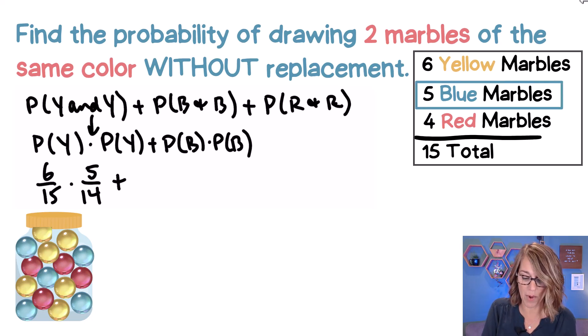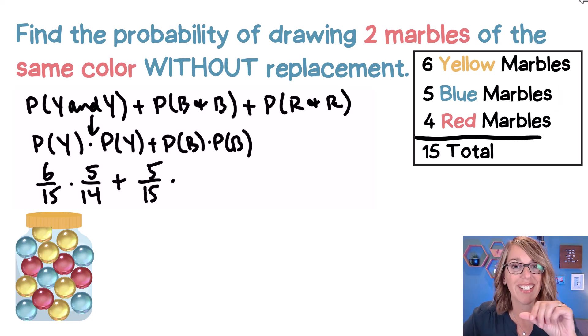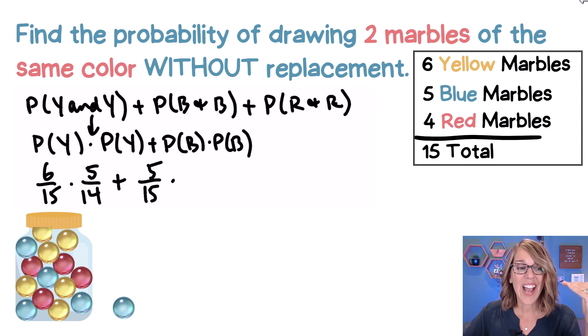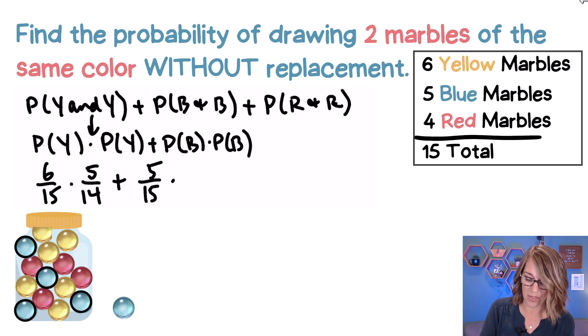But we need to assume this is conditional probability without replacement. So we've got to assume that the first one was blue. We take it out and set it aside. Now we've got four blue marbles left. So times four over, and there are 14 marbles left.